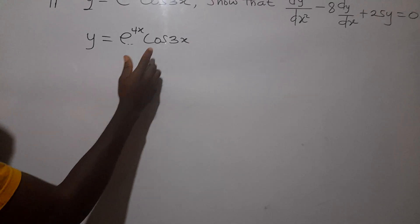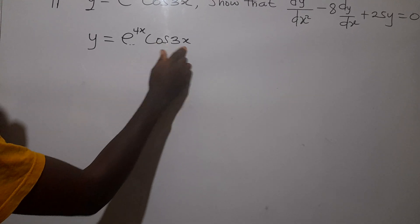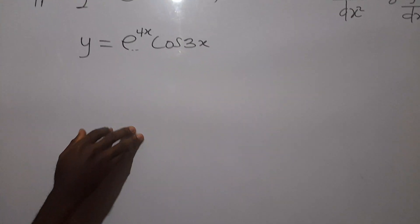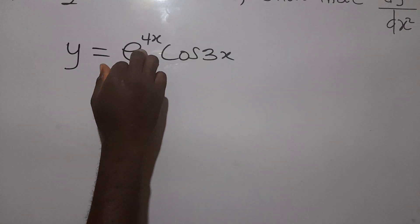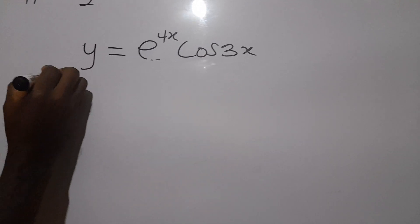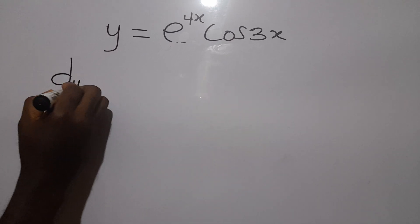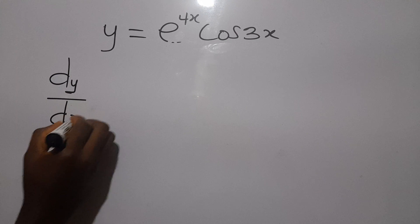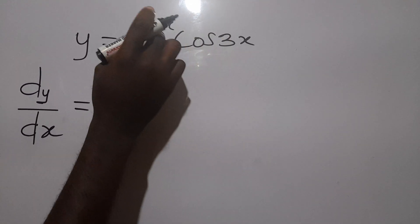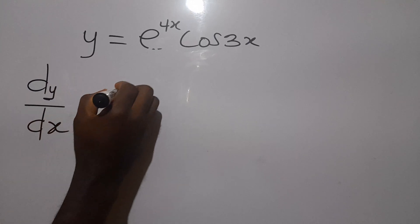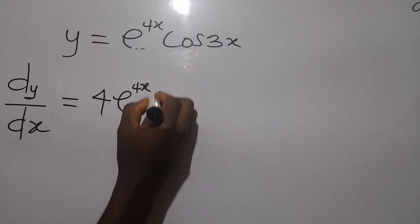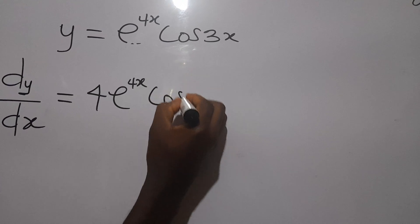Now, to use the product rule, we will keep cos(3x) and differentiate e^(4x), then plus. Now, we keep e^(4x) and differentiate cos(3x). So, we can say what dy/dx is equal to. First we are keeping cos(3x) and differentiating e^(4x), and we will get 4e^(4x) times cos(3x).